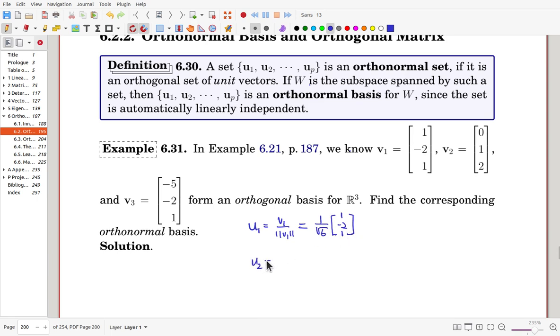How about u2? It comes from v2, normalized by its length. For v2, the length is 1 plus 4, square root of 5. So 1 over square root of 5, and v2 is [0, 1, 2].